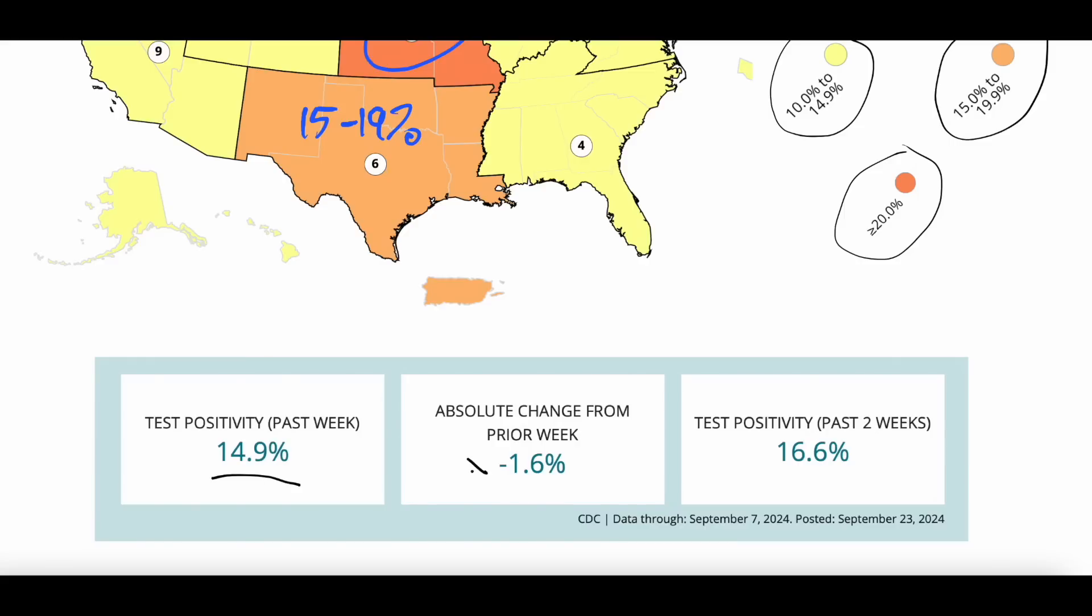These are actual numbers. In general, on average, at least in the United States, the test positivity in this past week was 15 percent on average. So 15 percent of all tests done and reported were positive for COVID-19. It is down a little bit from the prior week, down 1.6 percent. The past two weeks, it's averaged 16.6 percent. So this August to September period, we had increasing case counts, down a little bit but still quite high. That means almost every one in five tests for COVID being done is positive.